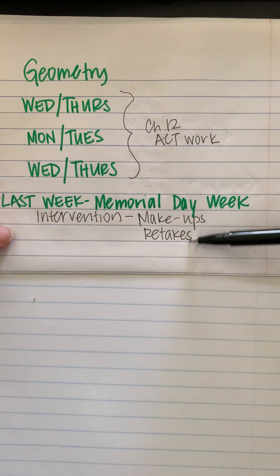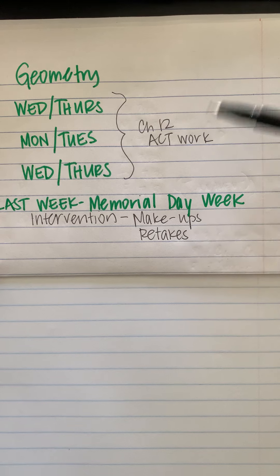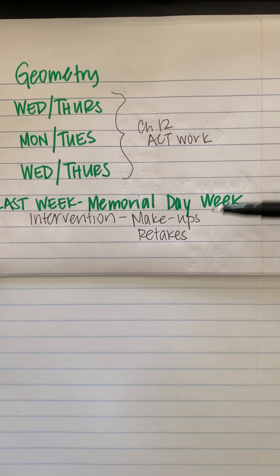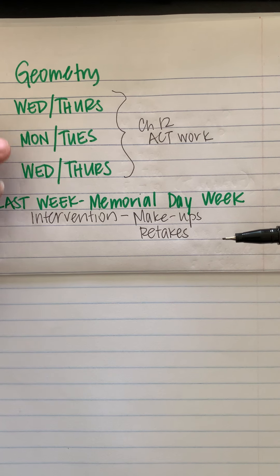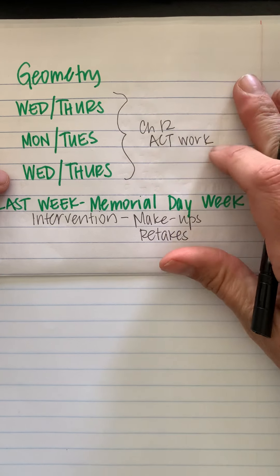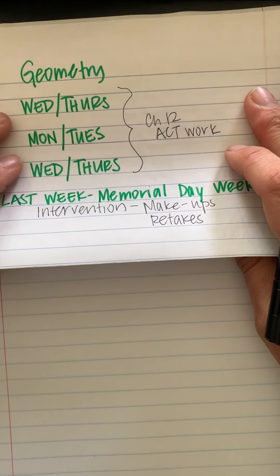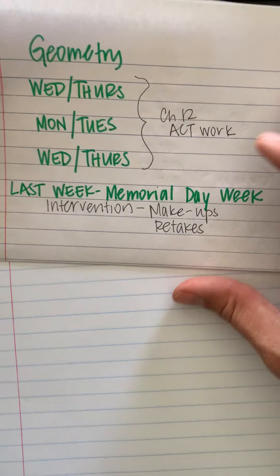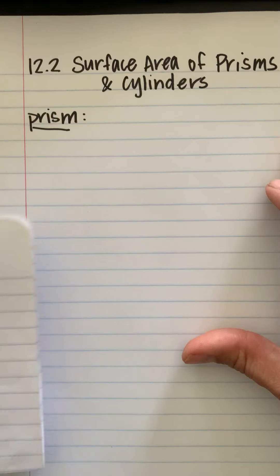Continue to work on corrections or retakes. I know some of you have already contacted me about retakes — I will get you your old test, and you can do a new version or do corrections. That's our last week or so here, which is kind of crazy, but we'll do our best to get in good work without overloading you either. What we're working on today is section 12.2, and I'm skipping around a little bit just because we only have like three class periods left.